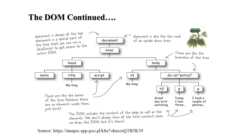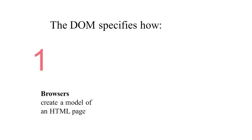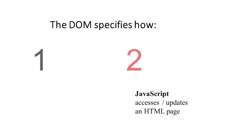Looking at the DOM diagram, the document object model is at the top of the structure, with children below it arranged in body and head. The Document Object Model constructs a tree-like structure. The browser creates a model of the HTML document, and JavaScript accesses and updates the HTML page or document through it.